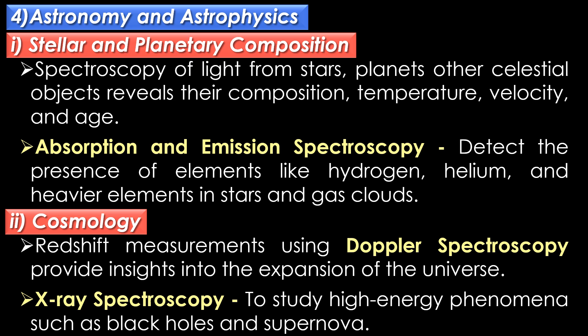In astronomy and astrophysics, spectroscopy is used for stellar and planetary composition studies and cosmology. In stellar and planetary composition studies, spectroscopy of light from stars, planets and other celestial objects reveals their composition, temperature, velocity and age.